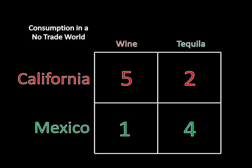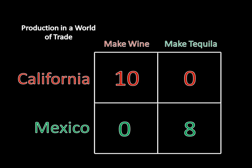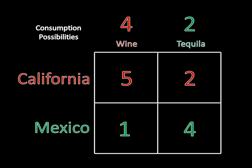On the other hand, if we do allow the states to trade, then the states can make what they're specialized at. California is really good at making wine, so California is going to make ten bottles of wine, and Mexico is going to make eight bottles of tequila. Then we're going to have them trade with one another. California, in order to be willing to trade, needs to get its five bottles of wine and two bottles of tequila. And in order for Mexico to be happy, Mexico must get one bottle of wine and four bottles of tequila.